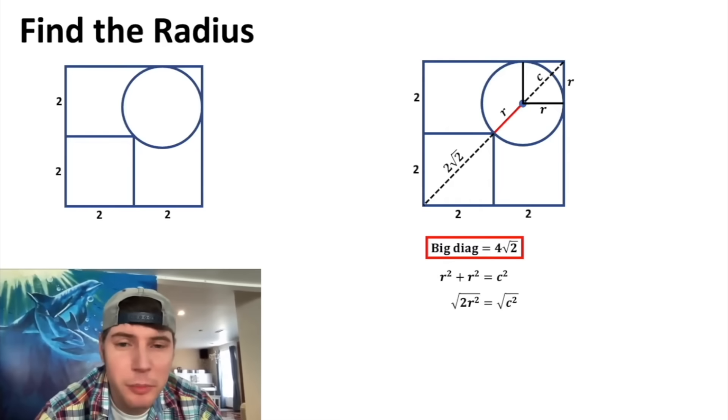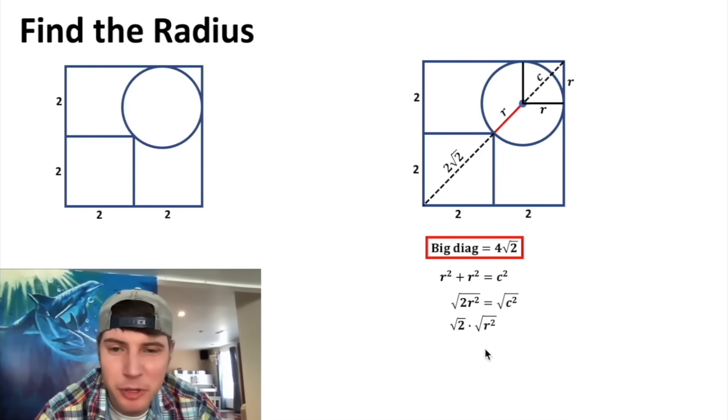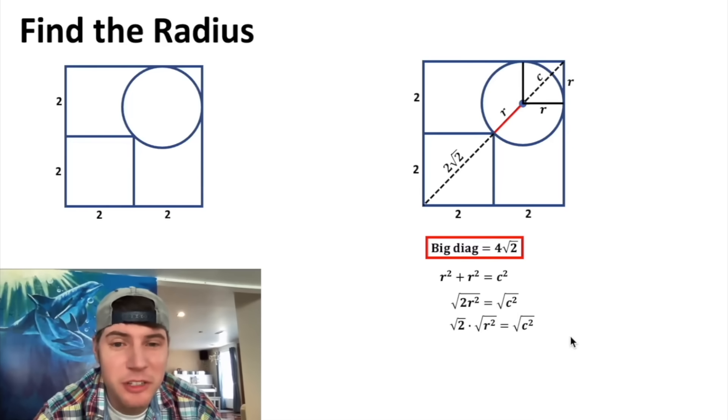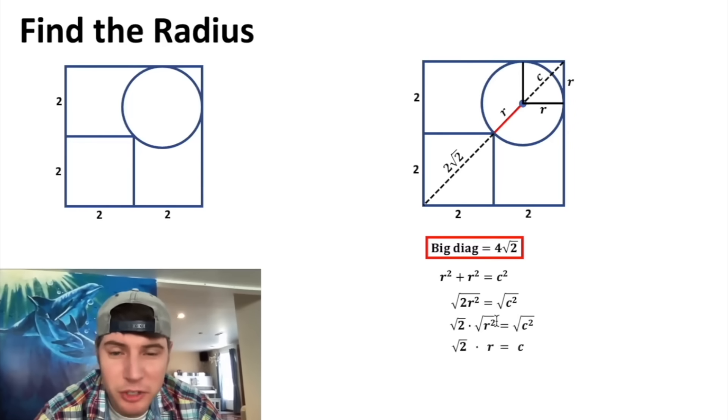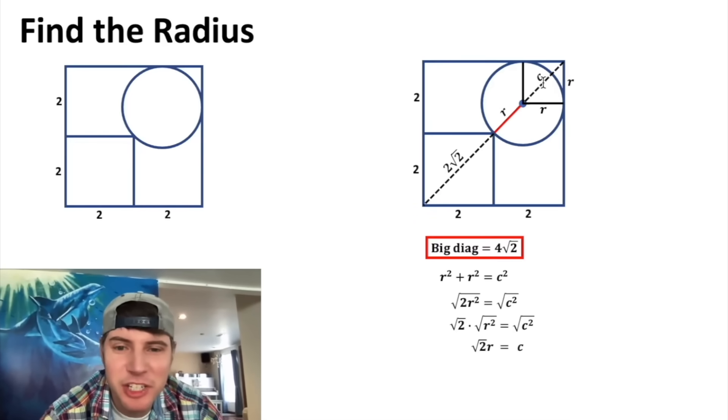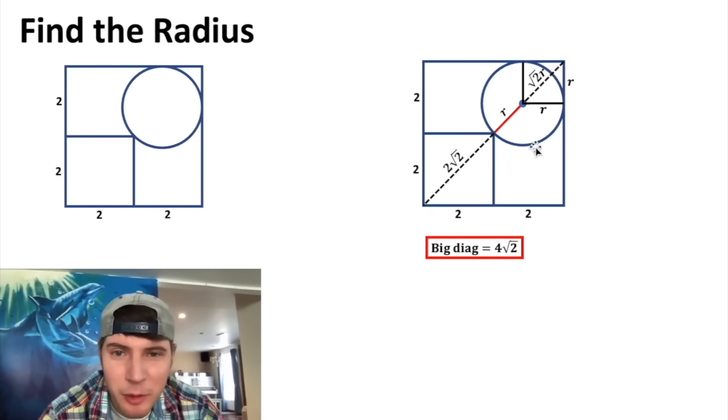Well r² + r² is 2r². We can square root both sides. The left hand side can be broken out into square root of 2 times square root of r², and the right hand side would just be square root of c². And square root of r² is just r, and square root of c² is just c. And we can smush these together and we have √2r = c. Up here was our diagonal c, so we can change that into √2r.